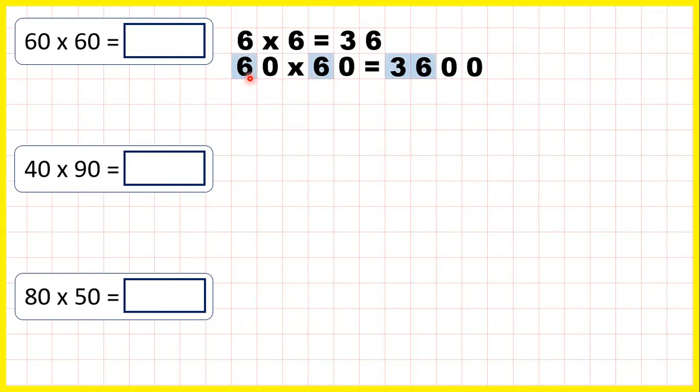That's because 6 times 6 is 36, but then because we have a total of two end zeros in the question, we need two end zeros in the answer. So 60 times 60 is 3,600.